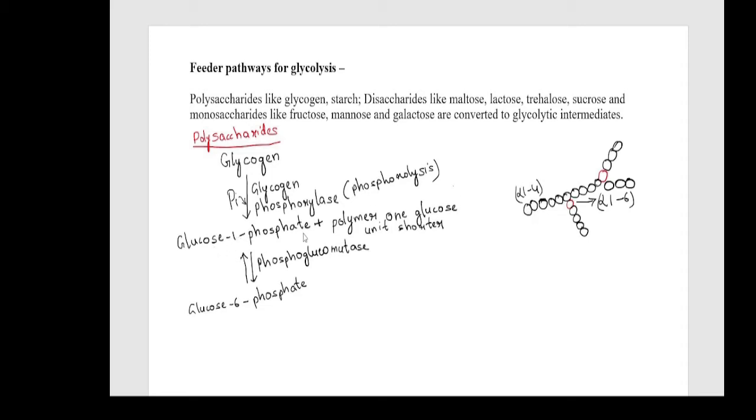Each time it gives glucose-1-phosphate and the polymer one glucose unit shorter. In this reaction the attacking species is inorganic phosphate and this reaction is called phosphorolysis.